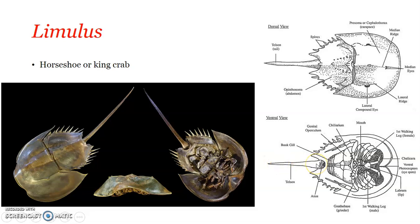The opisthosoma bears six pairs of appendages, where the first pair forms the genital operculum. The remaining five pairs form the book lungs, which are responsible for respiration. In Limulus, respiration is brought about by book lungs. Excretion is by coxal glands, and the larva is a trilobite larva. Limulus is a marine organism found burrowing in the sand.